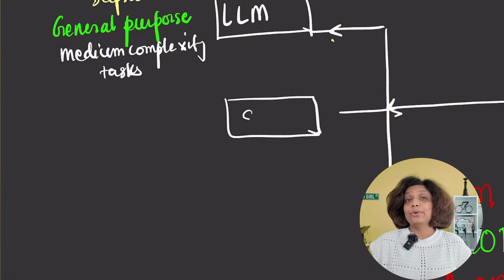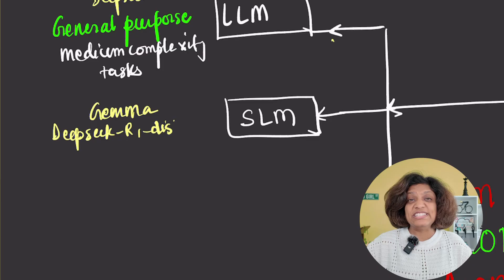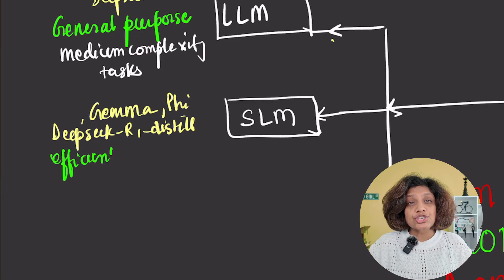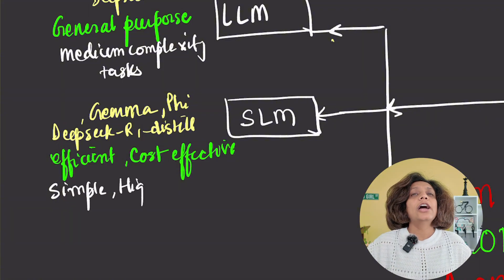You have small language models or SLMs like Gemma or DeepSeek R1 Distill. These are efficient and cost-effective, perfect for simpler, high-volume tasks. For example, an agent that just categorizes incoming support tickets or routes customer inquiries.